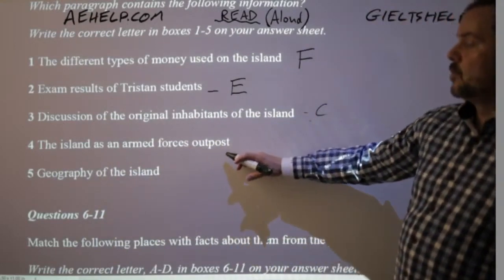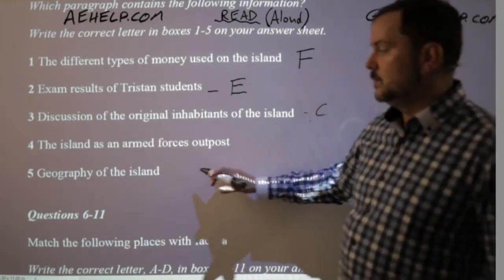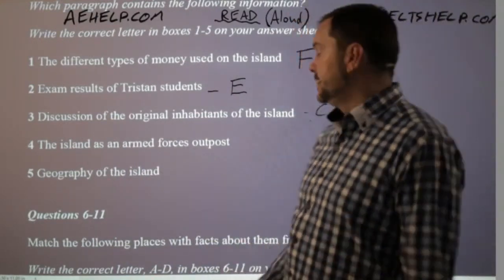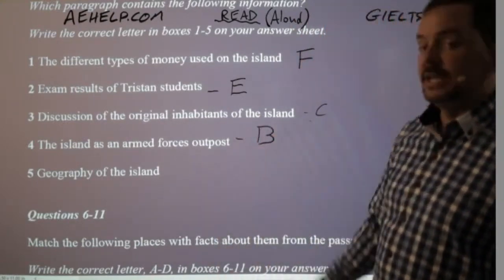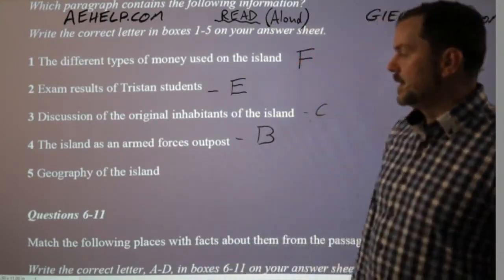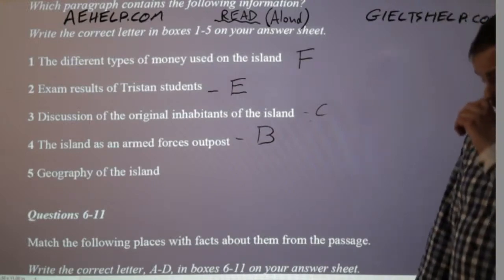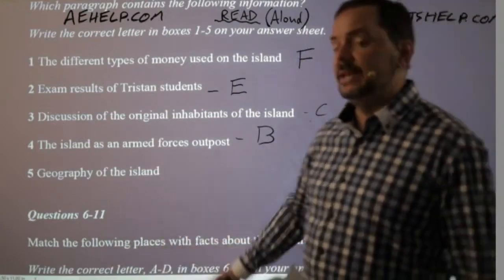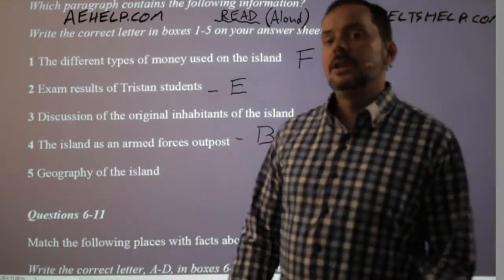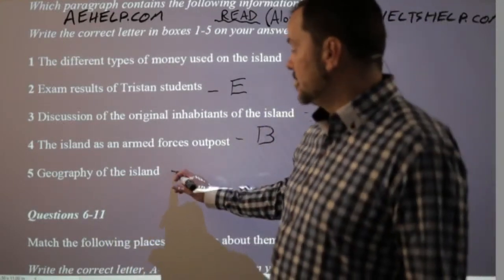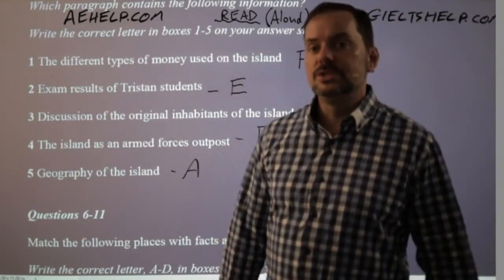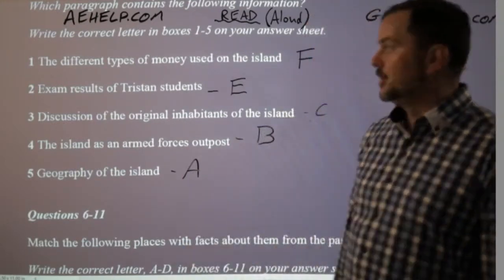Question 3: 'discussion of the original inhabitants of the island.' Devanche thinks it's C — let's check. Paragraph C says: 'it is thought that the residents descend from just 15 ancestors.' So C is correct — that's the paragraph about genetics, which makes sense because genetics are inherited from the original inhabitants. Question 4: 'the island as an armed forces outpost.' The answer is B — the second paragraph talked about the person who discovered the island and its use as a military base. Everyone got that quickly.